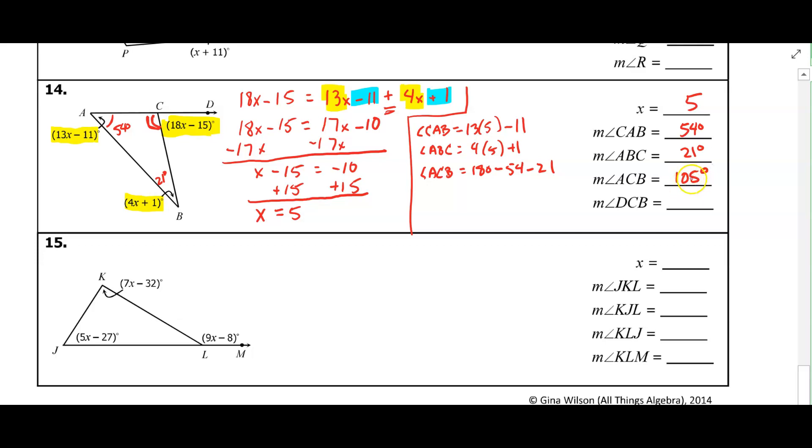Alright, now that I have that ACB is 105, I know that these two angles are a linear pair. So this angle DCB on the outside, the 18X minus 15, it should be 75 degrees. So let's go ahead and check that. So angle DCB, 18 times 5 minus 15. And when we calculate that, we in fact do get 75 degrees.